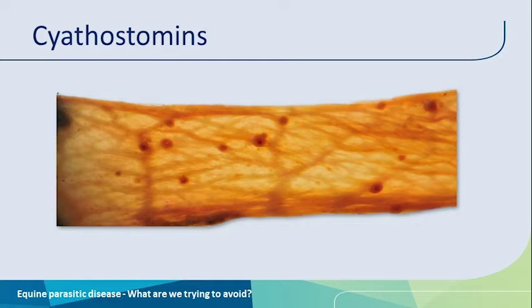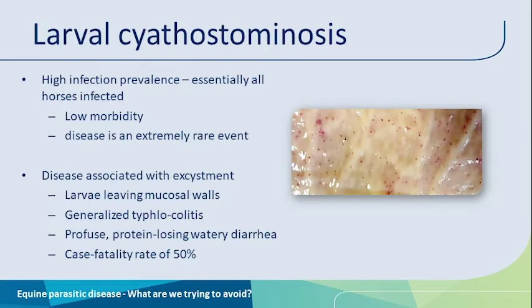Starting with the cyathostome parasites, or the small strongyles, classically well known to be causing disease in horses, especially due to the encysted larval stage shown in this image. What we know about the condition is that it is extremely rare. We have to consider that essentially every single horse in the world is infected with cyathostome parasites, and a very small subset ever develops any signs of disease — so it's a high prevalence but low morbidity condition.